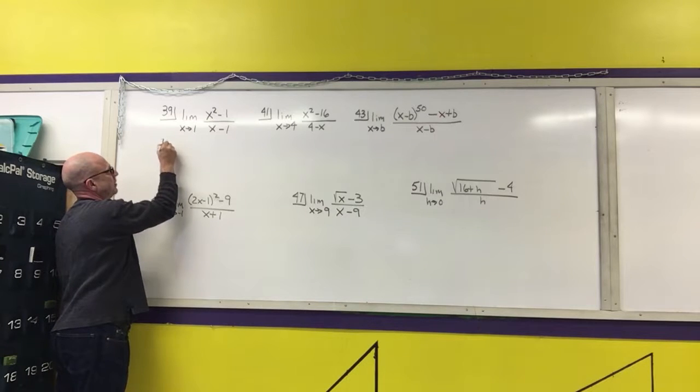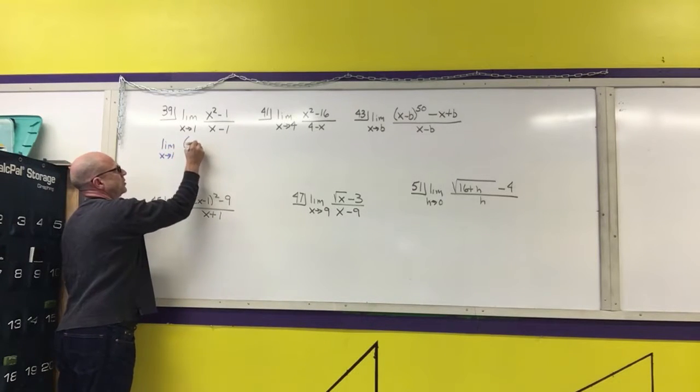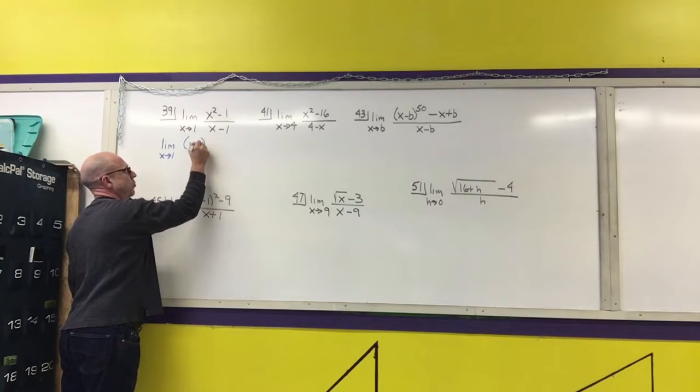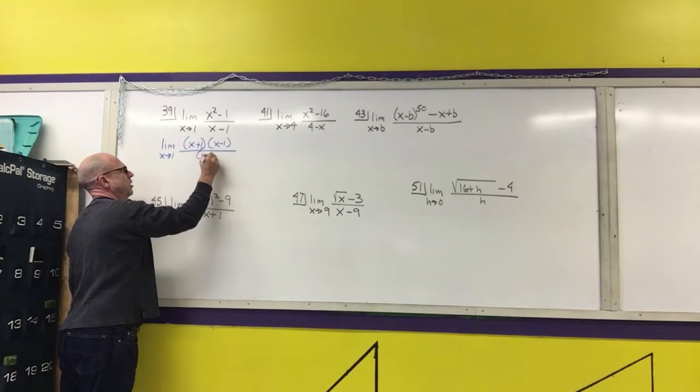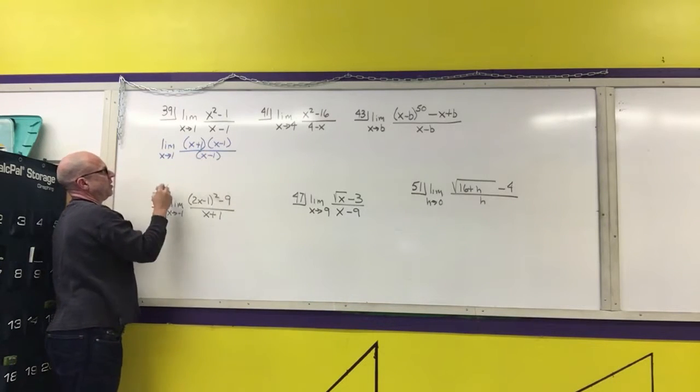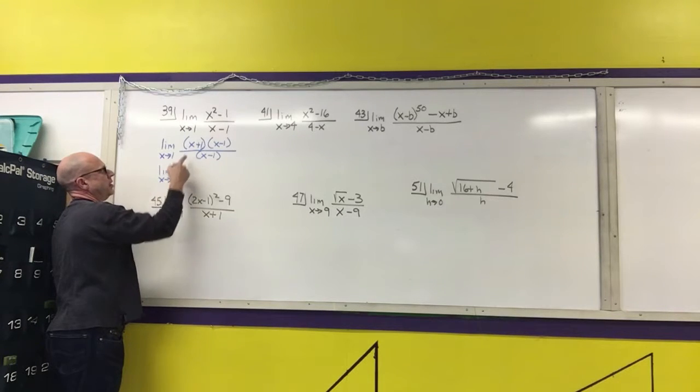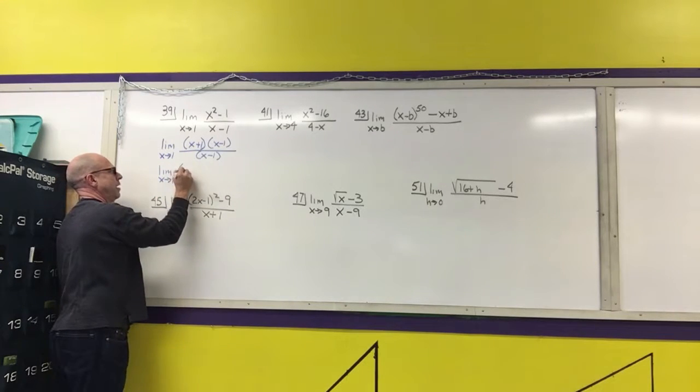So I can rewrite this as the limit as x approaches 1 of x minus 1 or x plus 1 times x minus 1 over x minus 1, which I can then rewrite as the limit as x approaches 1 of just x plus 1.